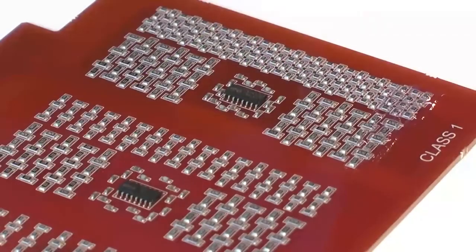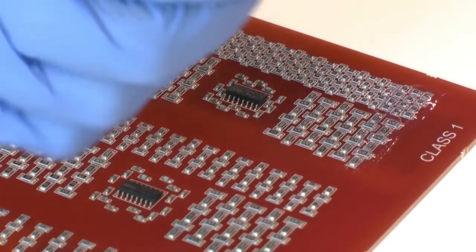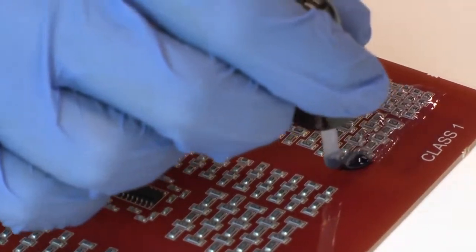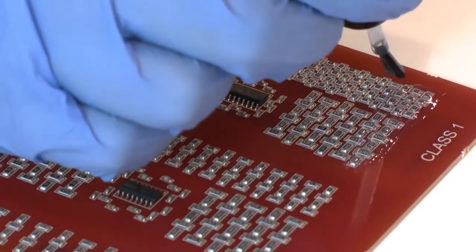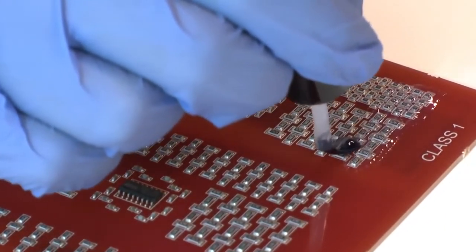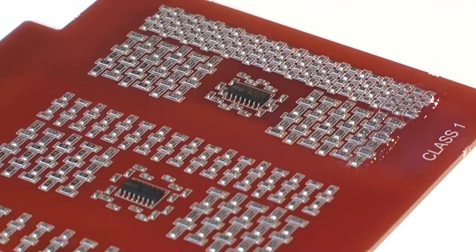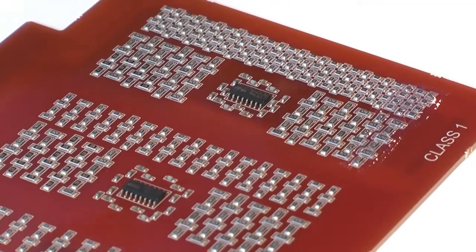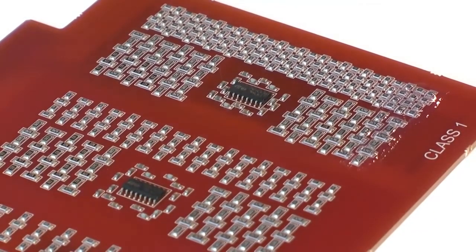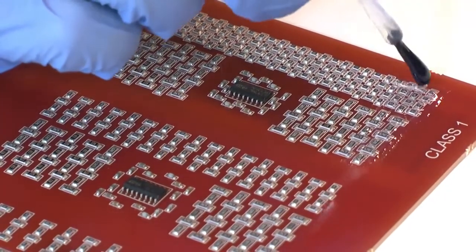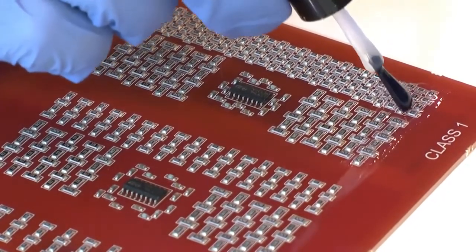Brush coating: As a general rule, Electrolube advises against using the brush coating method. As even with a skilled technician, there is a high potential to over-apply the coating. This being said, it can be a useful technique for repairing or touching up boards.